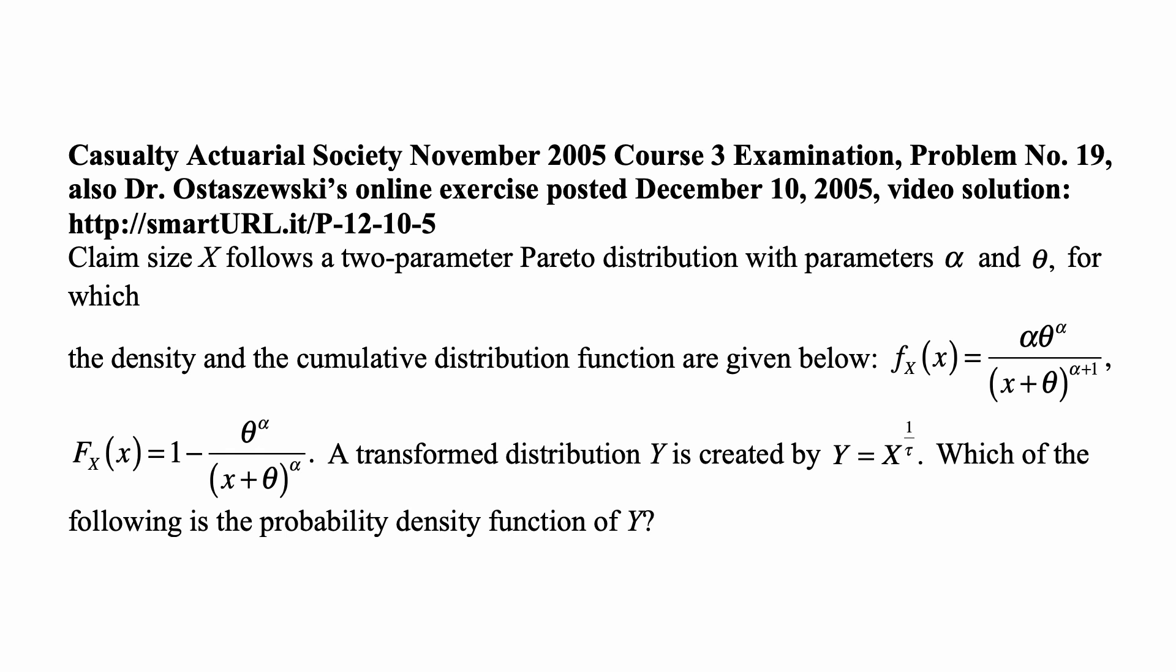Claim size X follows a two-parameter Pareto distribution with parameters alpha and theta, for which the density and the cumulative distribution function are given as f_X(x) = αθ^α/(x+θ)^(α+1), and F_X(x) = 1 - θ^α/(x+θ)^α.